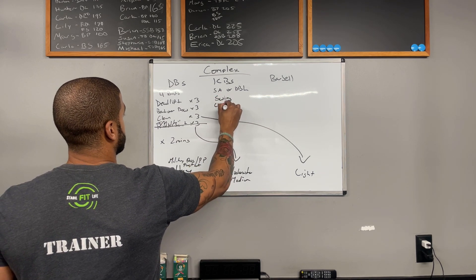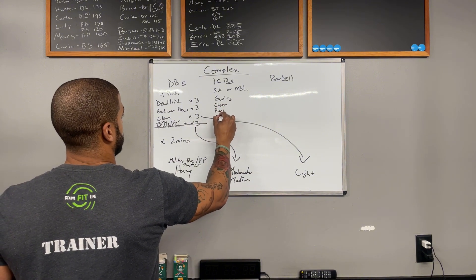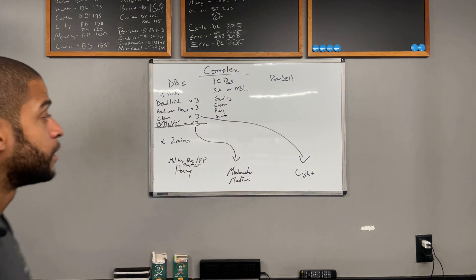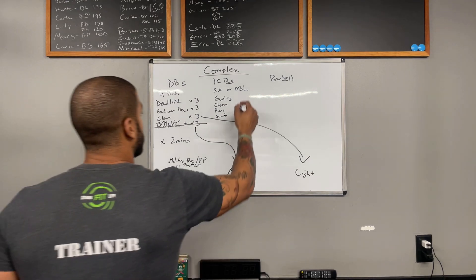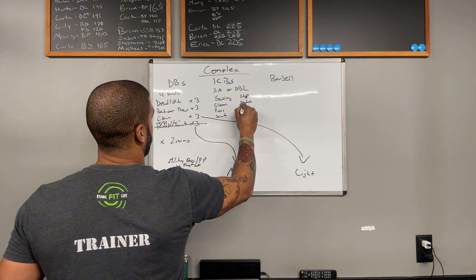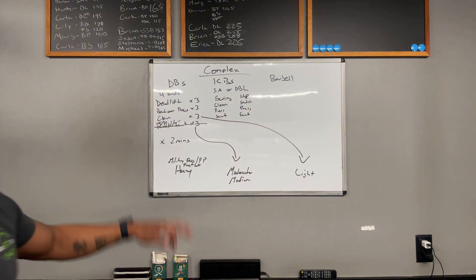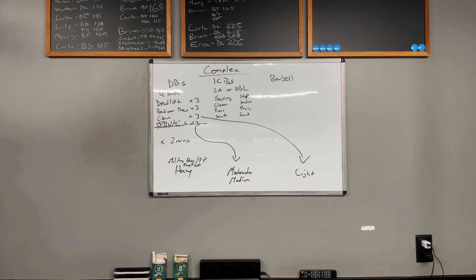So we can do single arm or double. We can go into that swing, clean, press, and squat. Or we can do a high pull, we can do a snatch, press, squat. Just give you an idea what those complexes look like.